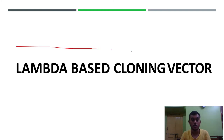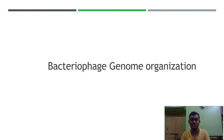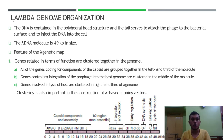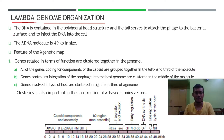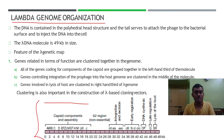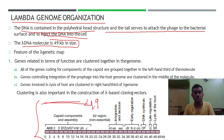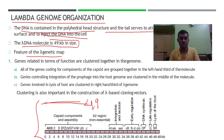In this video we'll discuss lambda-based cloning vectors, specifically the bacteriophage lambda genome organization. The DNA is contained in the polyhedral head structure, and the tail serves to attach the phage to the bacterial surface and to inject the DNA into the cell. The lambda DNA molecule is 49 kb in size.